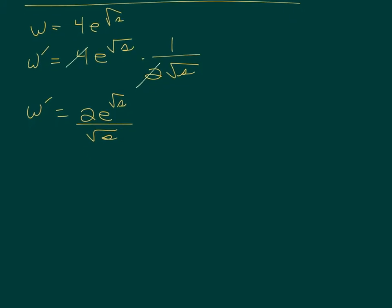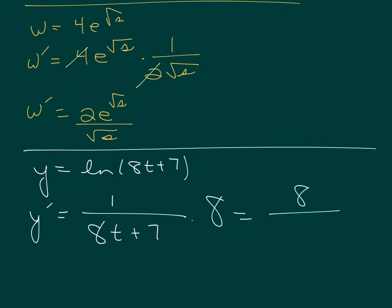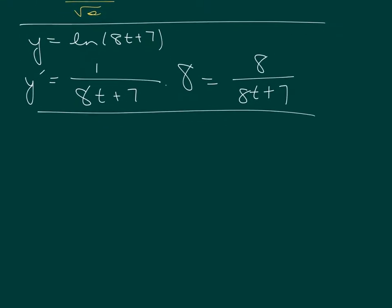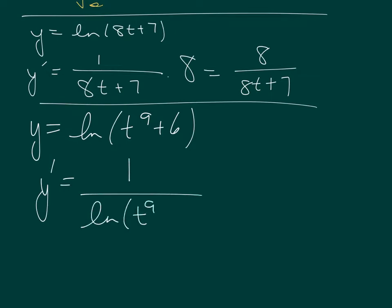If I have a log — y equals ln of 8t plus 7 — the derivative of a log is 1 over what's inside the parentheses times the derivative of what's inside the parentheses. So that gives 8 over 8t plus 7. Similarly, the derivative of ln of anything is 1 over the anything times the derivative of the anything — so for ln of t to the ninth, you'd get 9t to the eighth on the numerator.